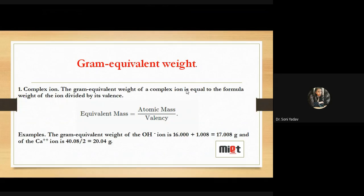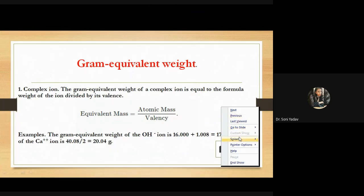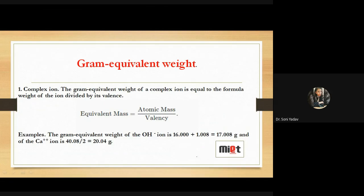Gram equivalent weight is a weight calculation. The gram equivalent weight of a complex ion is equal to the formula weight of the ion divided by its valence. Yaani ki agar kisi complex ion ka gram equivalent weight nikalna hai, to uska jo bhi formula weight hoga, usse divide karna hai jo bhi uske upar charge hai. Formula: equivalent mass = atomic mass divided by valency factor.